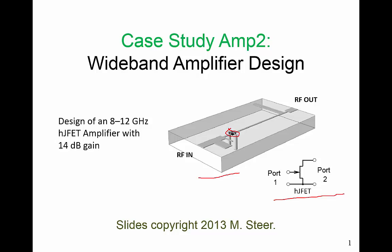We're going to design a HJFET amplifier that operates from 8 to 12 GHz with 14 dB gain. And what is shown in this image here is our final design with the FET. Then we have an input matching network. The input line here is 50 ohms, and the output matching network shown on the right here has a 50 ohm line as well.